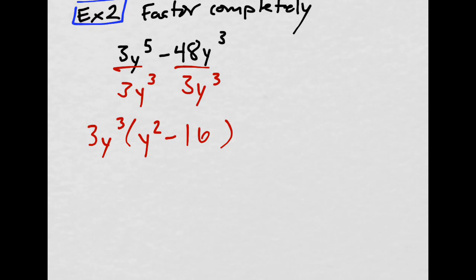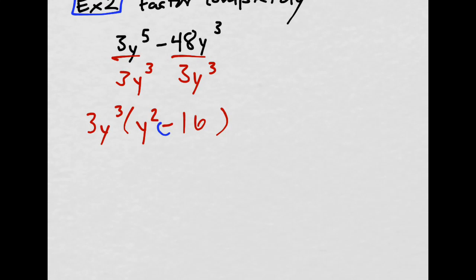This is why it's called the difference of squares, because we have a difference, and we have y times y, that's y squared, and 4 times 4, that's 16, that's 4 squared. There's a difference of squares.